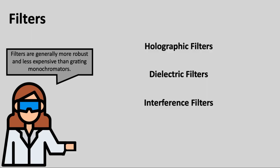Another option for removing unwanted wavelengths of light is to use a filter. There are several types of filters, such as holographic filters, dielectric filters, or interference filters, and each of these work in a slightly different way.